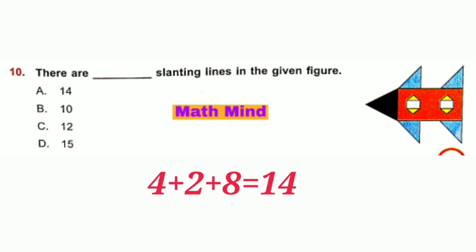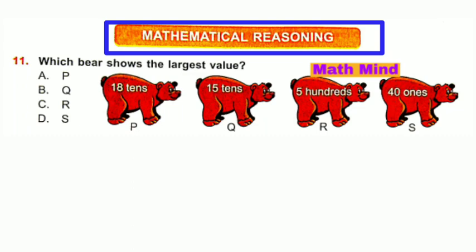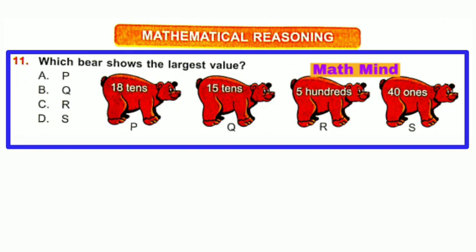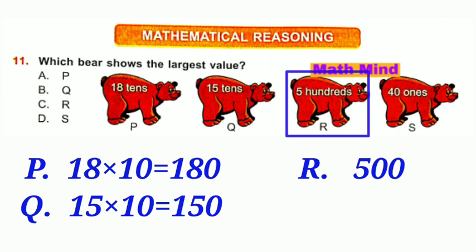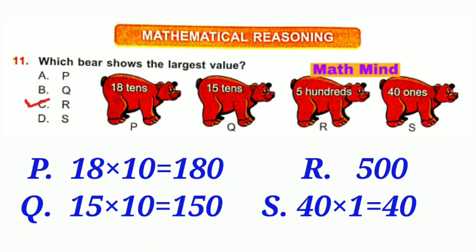Mathematical Reasoning. Question number 11: Which viewer shows the largest value? 18 tens: 18 × 10 = 180. 15 tens: 15 × 10 = 150. This is 500. 40 ones: 40 × 1 = 40. So, the largest value is 500. Option C is correct.